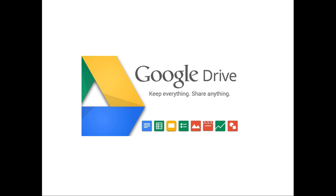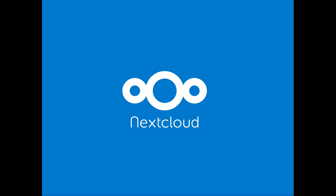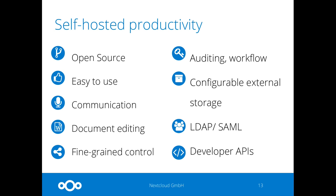And then these guys came. They made essentially another step — call it network drive 3.0 — which gives you all the same benefits, but you can actually collaboratively edit documents in real time with other people. And they added chat and audio and video calls. Now you guess why I talked about the fact that we have these features in Nextcloud, because we're working towards something here. Just like Dropbox, this was mostly for home users. Of course, companies and universities use it, but it primarily started as a home user technology, which is a limitation in some ways.